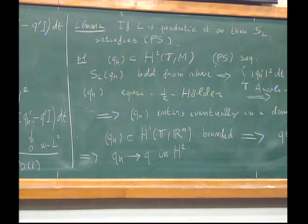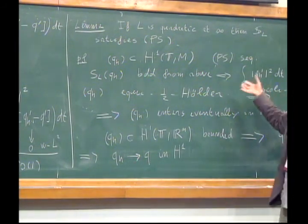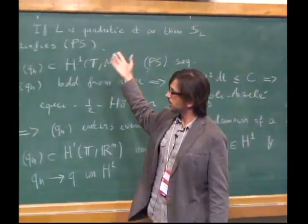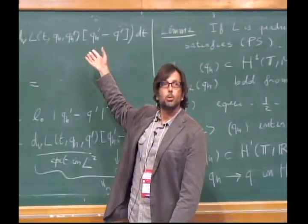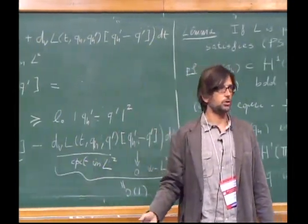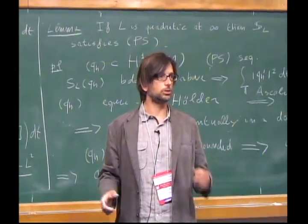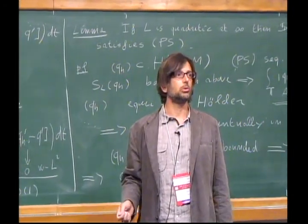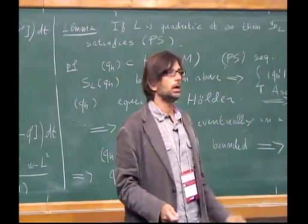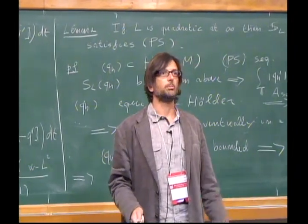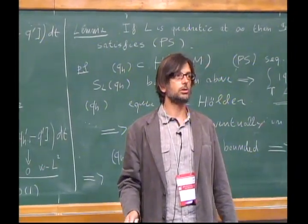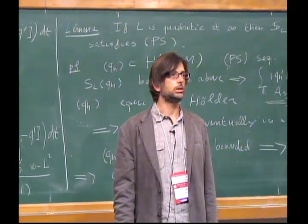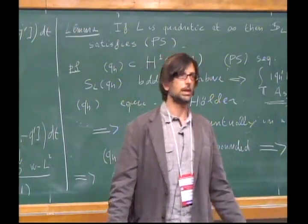I wanted to show this proof because one sees how the quadratic hypothesis matches our choice of function space — this is the function space where S_L satisfies Palais-Smale. The program for tomorrow is to describe the Morse homology of this function and then start relating it to the Floer homology of the Hamiltonian action functional.